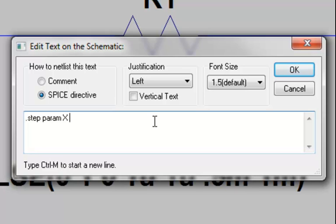Next, we need to complete the statement by specifying the steps for the parameter that we want. In this case, let's assume we want to go from 0.1 microfarad to 0.3 microfarads, and we want to do so in 0.1 microfarad steps.